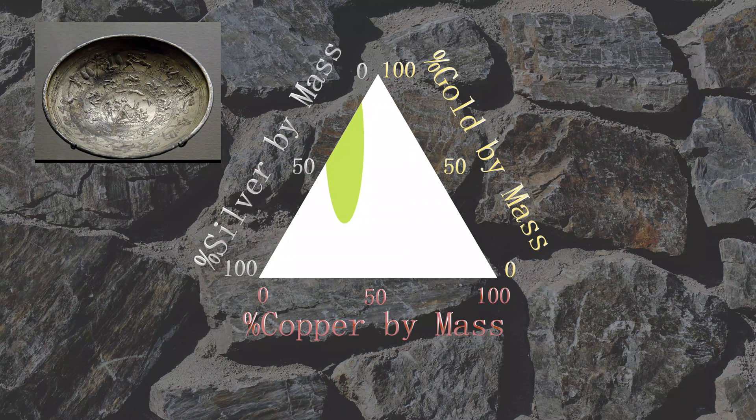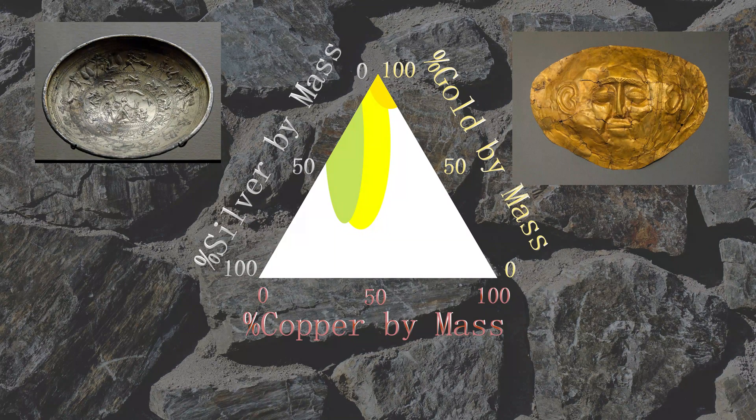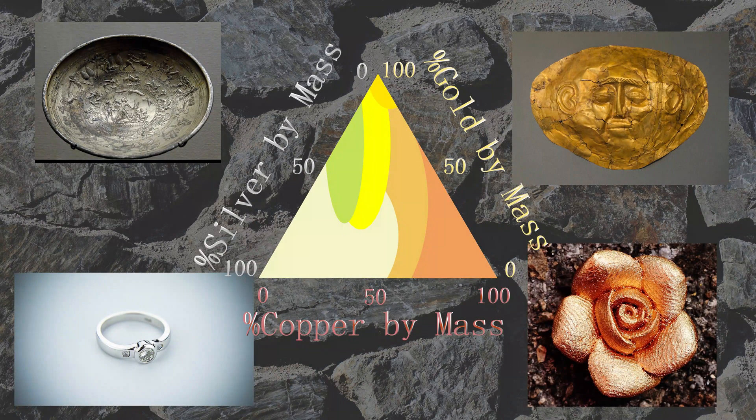Using other ratios you can also produce yellow gold, white gold, red gold, or rose gold.